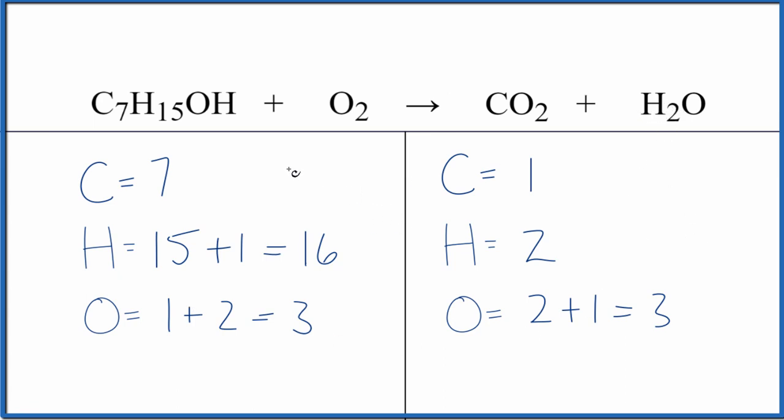I've already counted the atoms up. Make sure you count 15 plus this one here. That'll give you 16 hydrogens. And then for the oxygen, you have one plus two, three oxygen atoms. Over here, two plus one, three oxygen atoms. So make sure you count those up right or it gets very difficult.